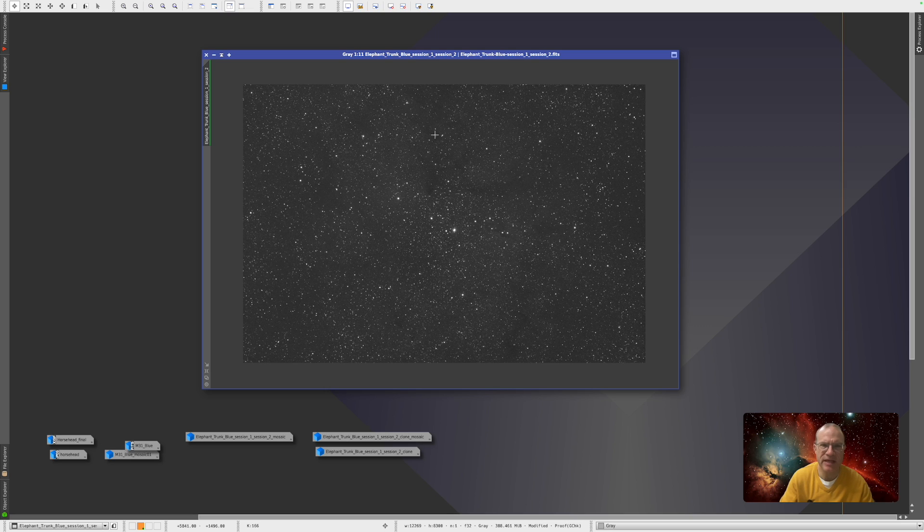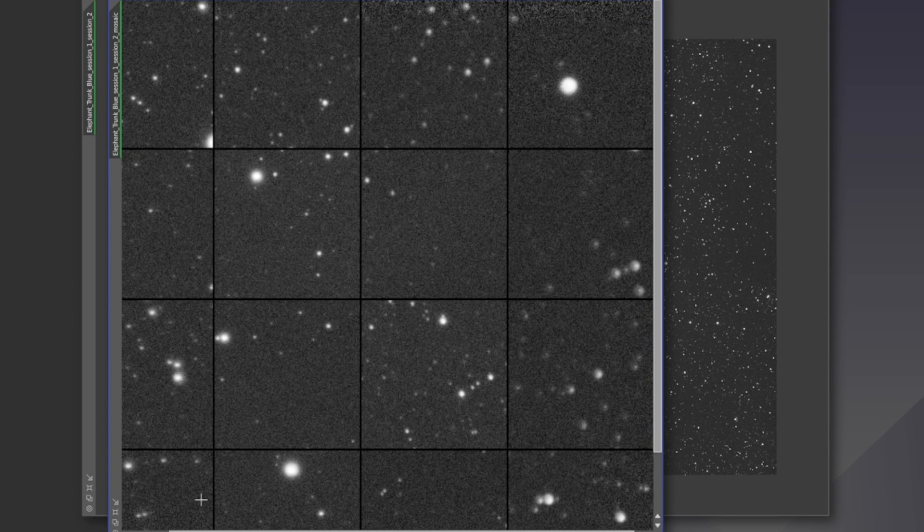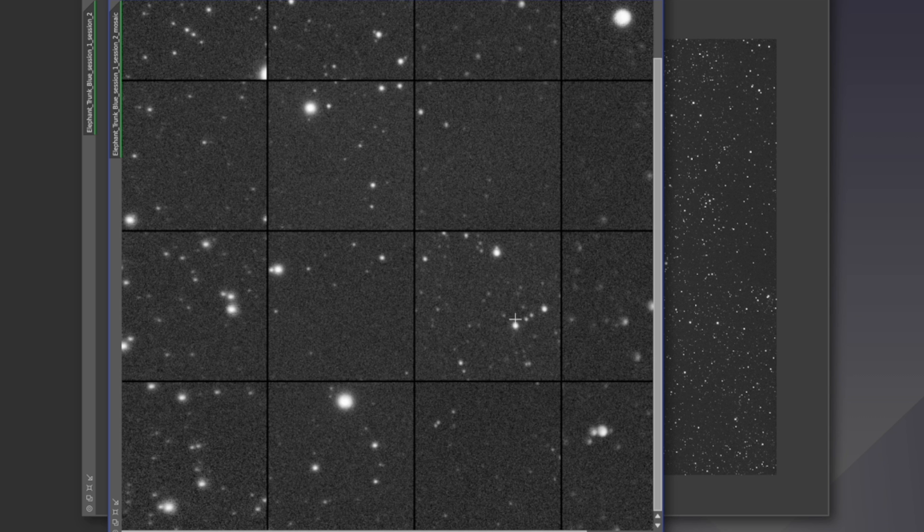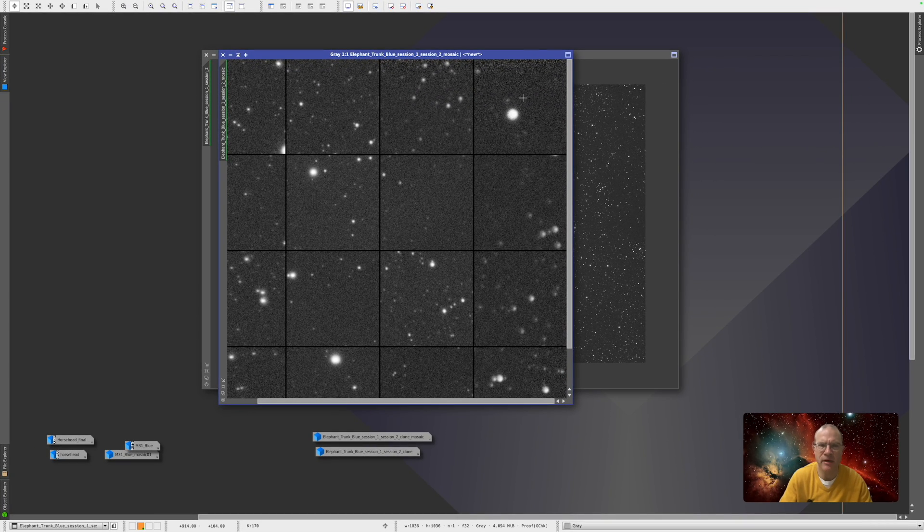So let's do the same here with the elephant nebula. This is just the blue channel again, so the nebulosity is not really visible. But we want to do again some pixel peeping. So here again with aberration inspector. For example here, they look very round. When you look in the middle, they're very round. And even here on the right side, they're mostly round.